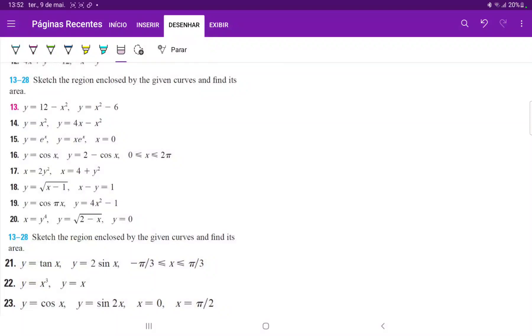For number 17, we want to draw these curves and find the area between them. Now these curves here and here, they're both transformations of this equation: x is equal to y squared.